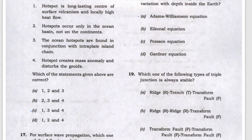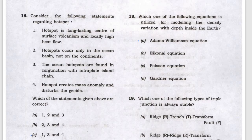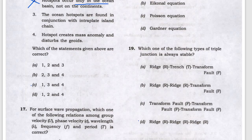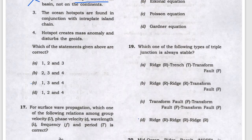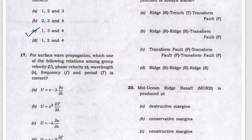Next question is about hotspots — the second statement will not be correct because hotspots occur not only in oceans but also on continents. So answers one, three, and four are correct. Next, the relationship between group velocity and phase velocity — A will be the answer.